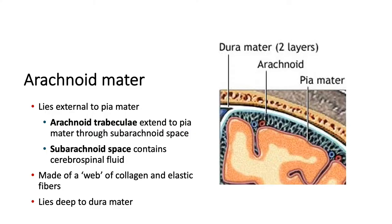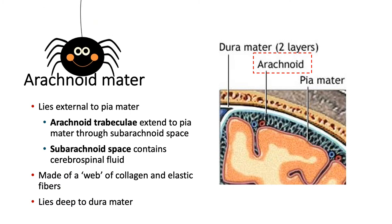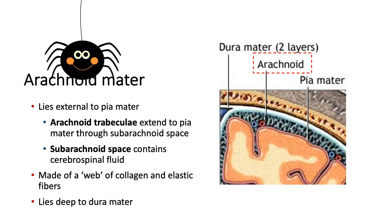External to the pia mater, we have the arachnoid mater. Directly beneath that, extending to the pia mater, we have what is called arachnoid trabeculae. Trabeculae are connective tissues that form these column-like structures — also prominent in bone. It's made of collagen and elastic fibers and creates a web-like appearance, hence arachnoid mater. It's the subarachnoid space associated with the arachnoid mater that contains cerebrospinal fluid — that area with the trabeculae creates a hollow space that fills up with CSF.